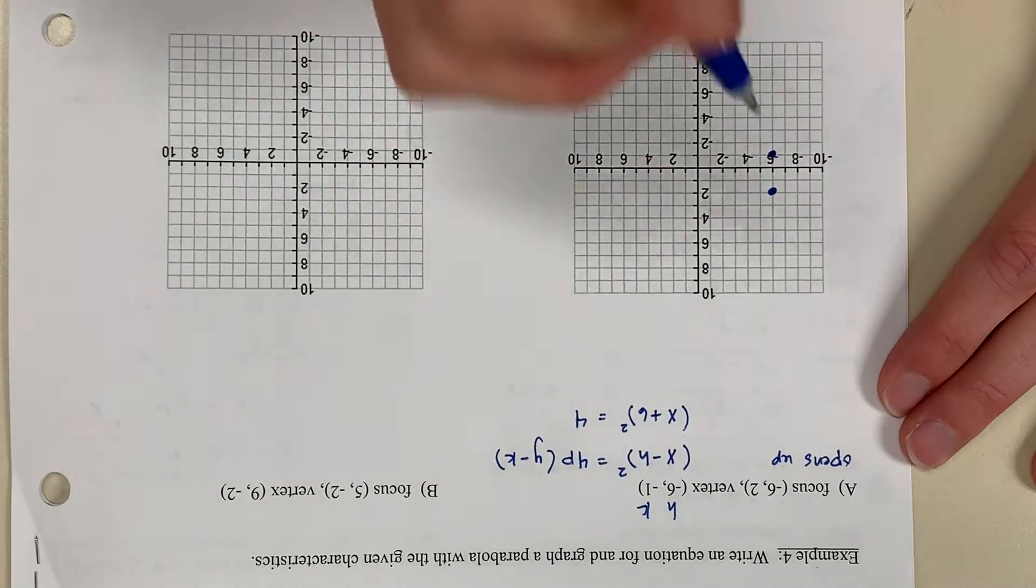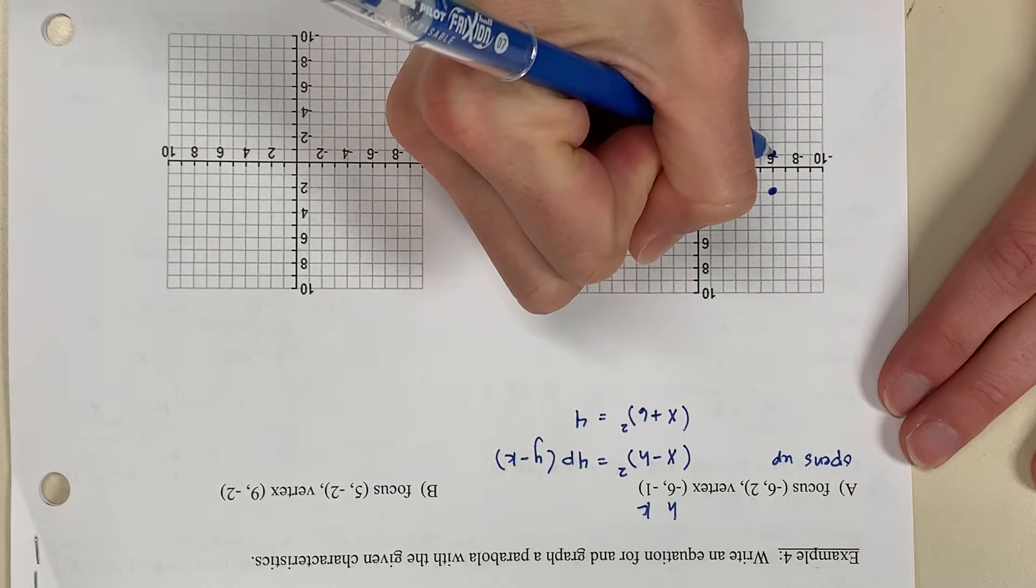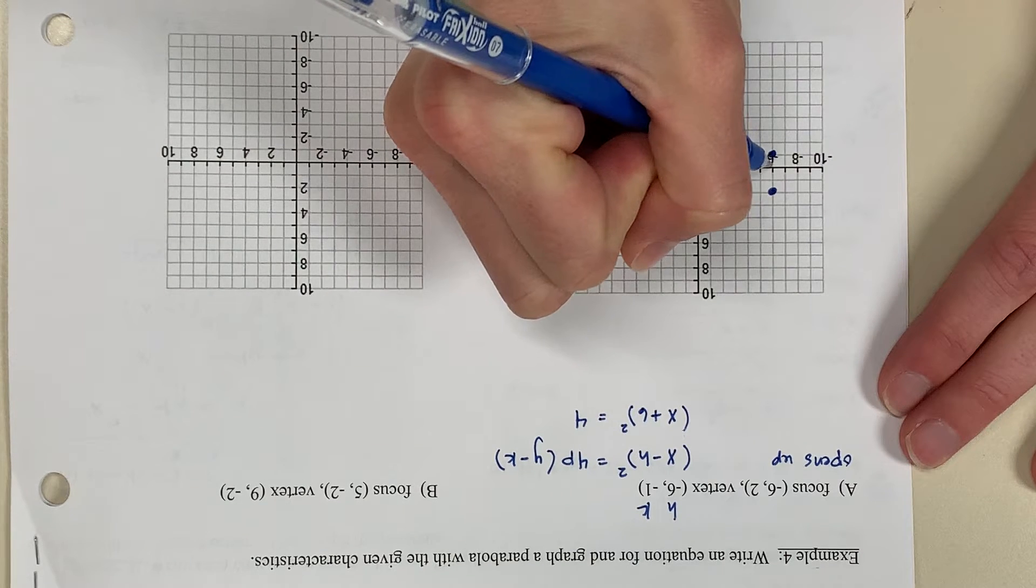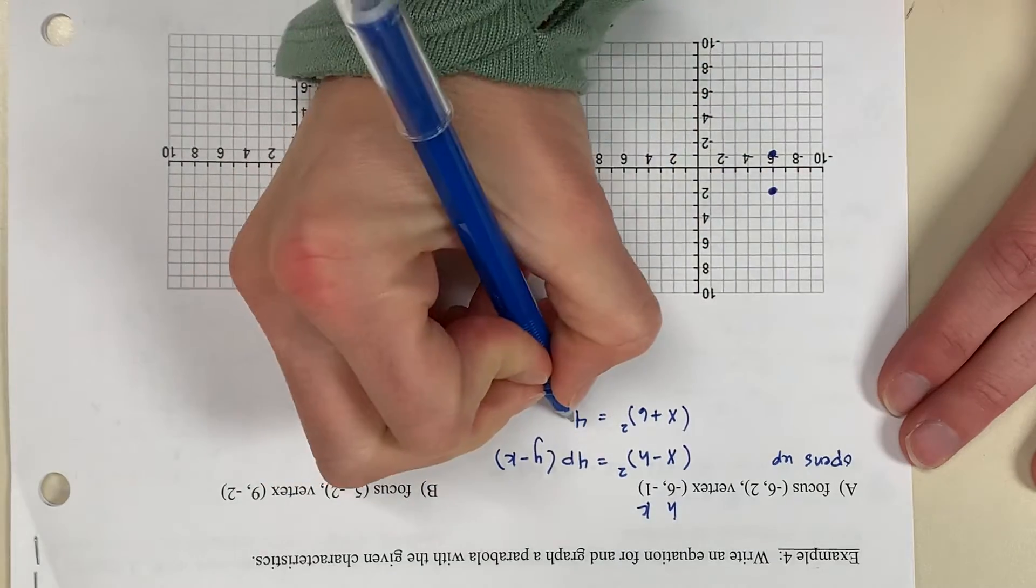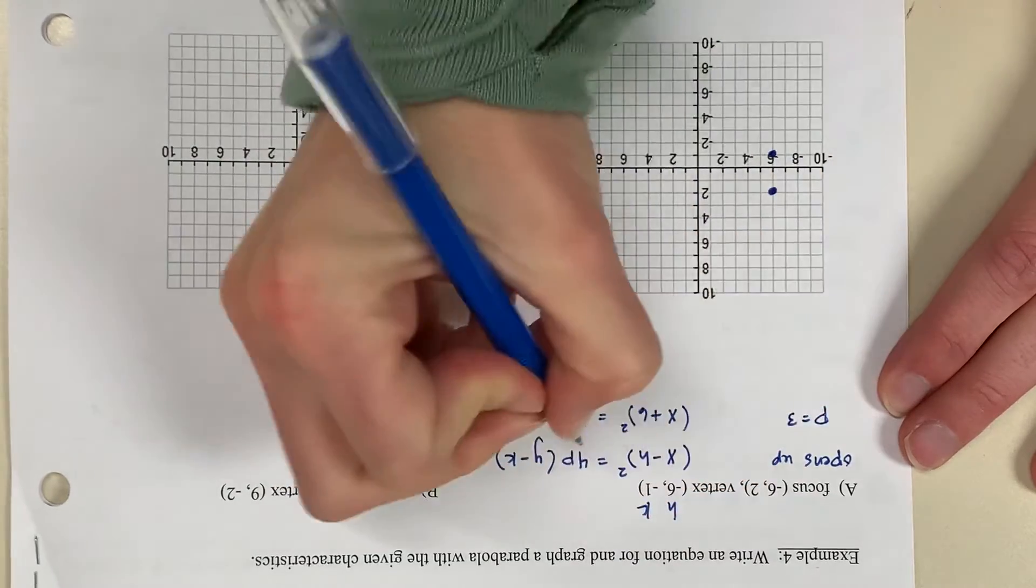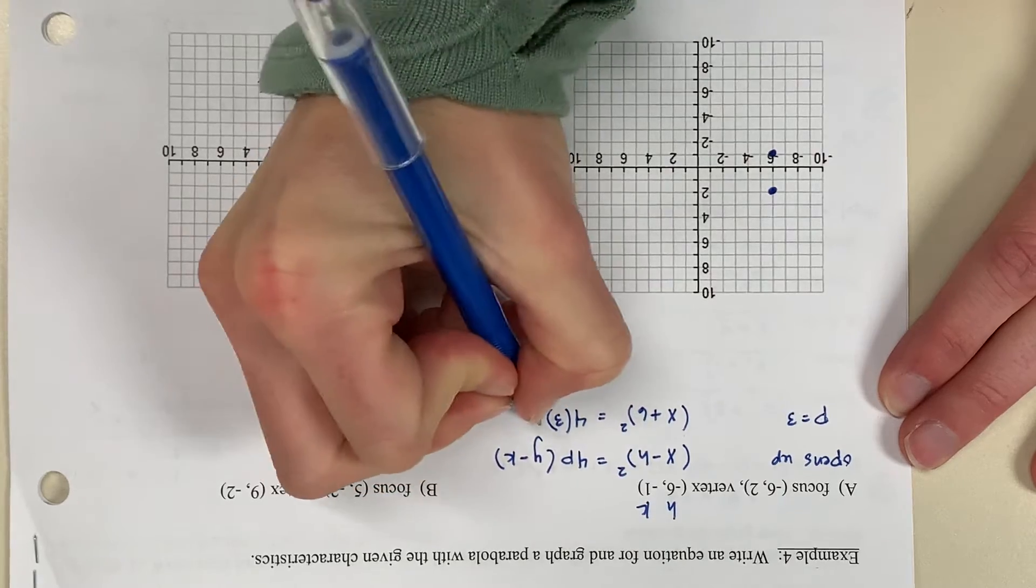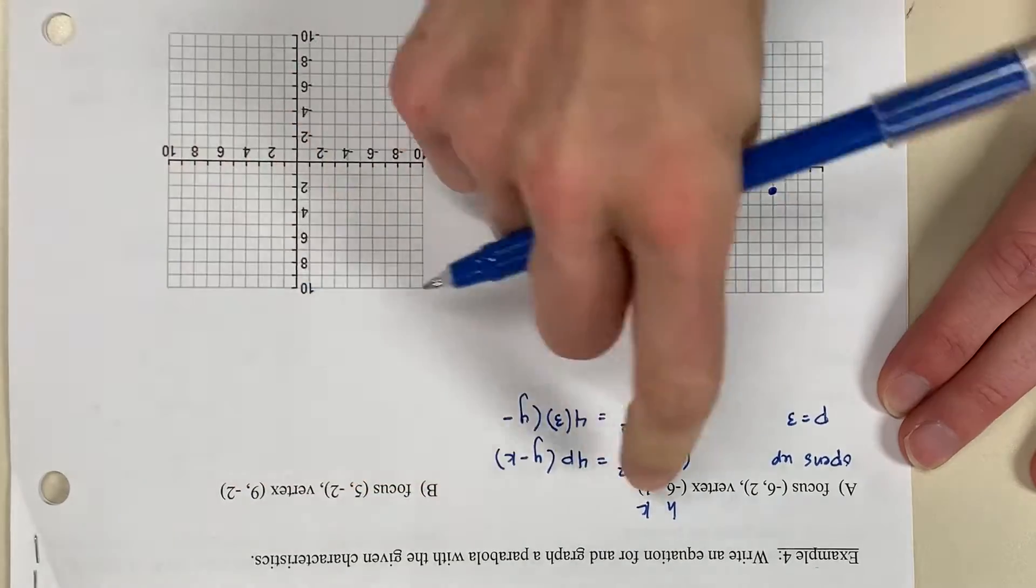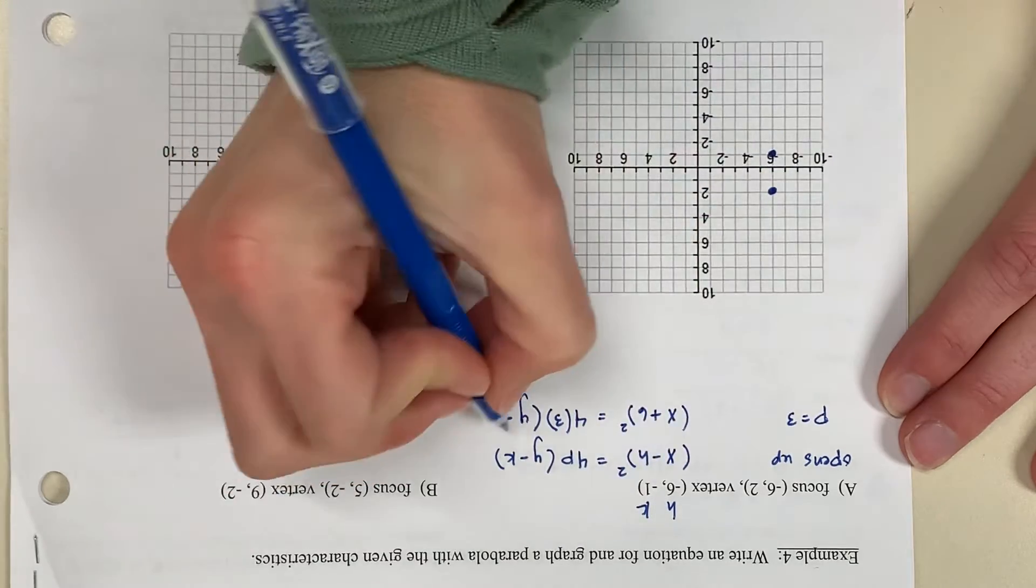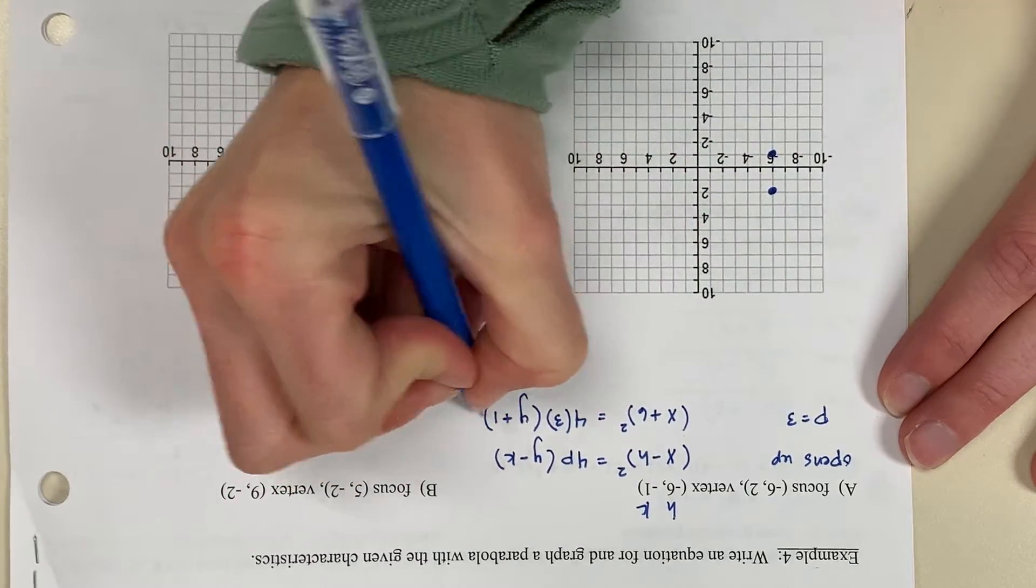Now p is the distance from the vertex to the focus. So if I count from vertex to focus, 1, 2, 3, p is 3. And I have y minus k or y minus k is negative 1. y minus negative 1 is a positive 1.